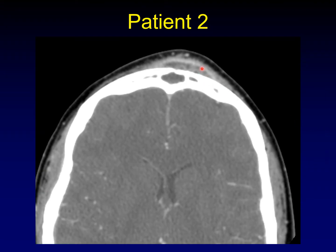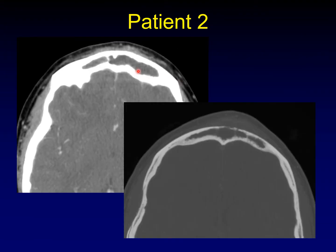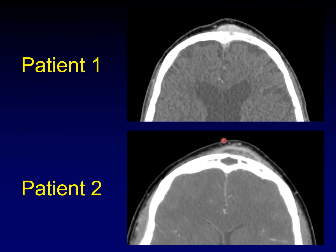Here's patient number two. Once again, we have a mass deforming the shape of the forehead with abnormalities in the underlying frontal sinus. A cut slightly lower down shows abnormalities throughout the frontal sinuses and again a ratty appearance to the anterior and posterior tables. This would be a good time to pause the video and see if you can figure out what the different diseases are in patient number one and patient number two.